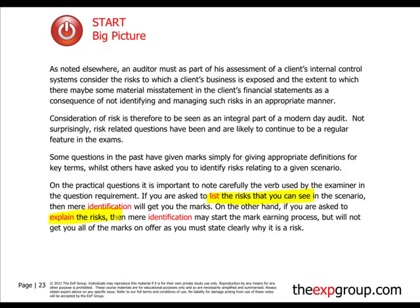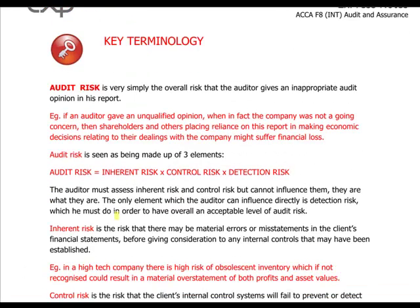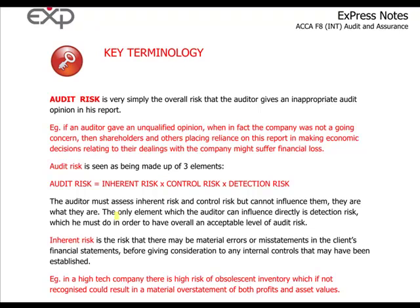This is where you will not get sufficient marks just for listing those risks. Audit risk has basically three components: two of them cannot be influenced by the auditor, and one of them can. Audit risk is the overall risk that an auditor gives an inappropriate opinion in his report — that he will be wrong at the end of his audit work.